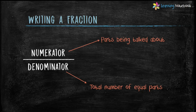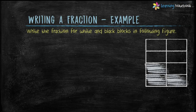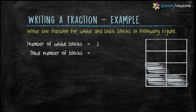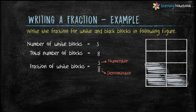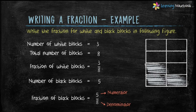Now let's do an example and write fractions. Write the fraction for white and black blocks in the following figure. Number of white blocks equals 3 and total number of blocks equals 8. Therefore, fraction of white blocks equals 3 by 8, where 3 is the Numerator and 8 is the Denominator. Number of black blocks equals 5 and total number of blocks equals 8. Therefore, fraction of black blocks equals 5 by 8, where 5 is the Numerator and 8 is the Denominator.